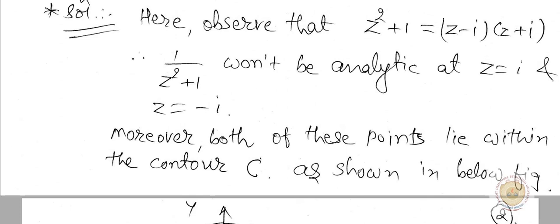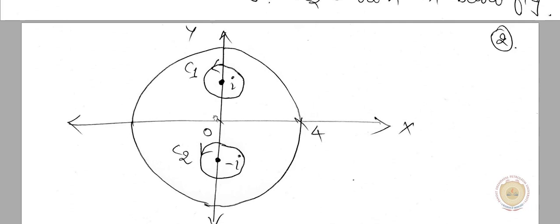Focus on the figure: the contour has center at the origin and radius 4, as given in the statement. The two singularities are +i and −i. Now consider these two singularities — C1 with center at i and C2 with center at −i. By the Cauchy-Goursat theorem for multiply connected domains, you can consider any random circle, with the only condition being that C1 and C2 must be disjoint.